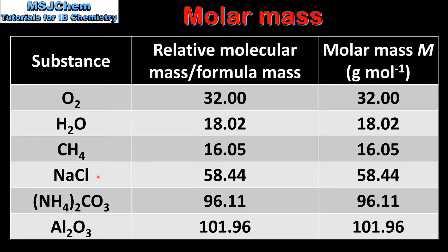Sodium chloride has a relative formula mass of 58.44 and a molar mass of 58.44 grams per mole. Ammonium carbonate has a relative formula mass of 96.11 and a molar mass of 96.11 grams per mole. Aluminium oxide has a relative formula mass of 101.96 and a molar mass of 101.96 grams per mole. This highlights the point that relative molecular mass or relative formula mass and molar mass are numerically equal.